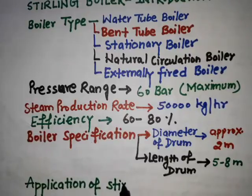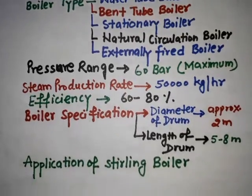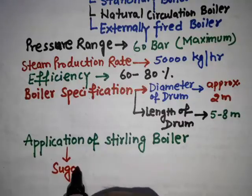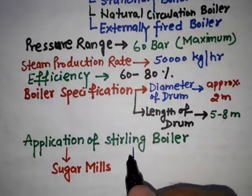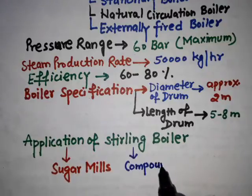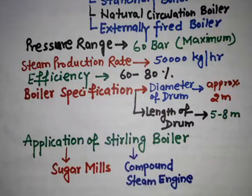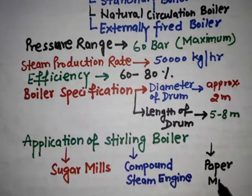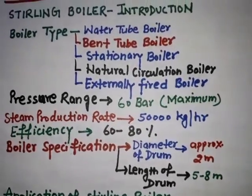Now I want to discuss some applications of the Sterling boiler — where it is basically used. The Sterling boiler is normally used in sugar mills, in compound steam engines, and also in paper mills.